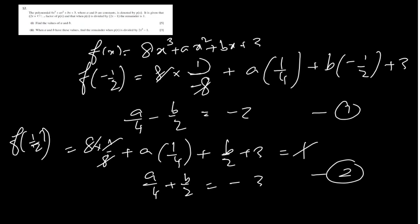From equations 1 and 2, do equation 1 plus equation 2. The b over 2 terms cancel — minus b over 2 plus b over 2. So you get a over 4 plus a over 4, which is a over 2, equal to minus 3 plus minus 2, which is minus 5. So a equals minus 10.